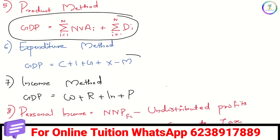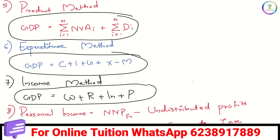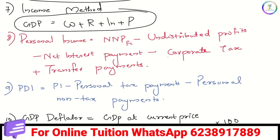Expenditure method: GDP is C plus I plus G plus X minus M. C is consumption, I is investment expenditure, G is government expenditure, X is export, and M is import. Income method: GDP is W plus R plus IN plus B — that is wage plus rent plus interest plus profit.